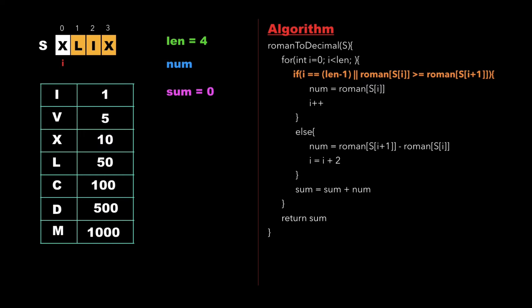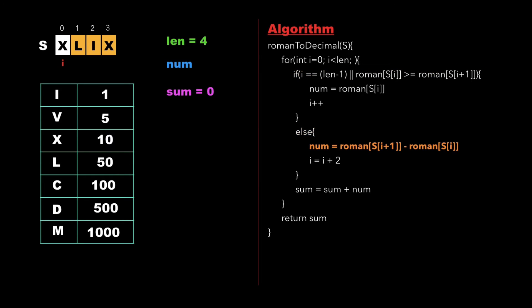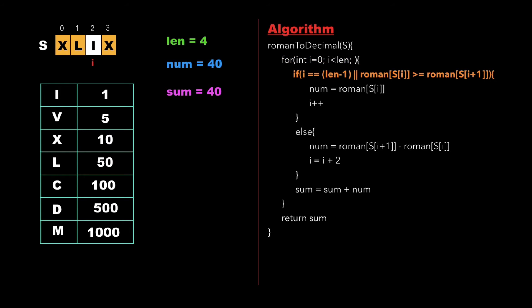We start by traversing the string from i equal to 0 to length. At each step we check whether i equals length minus 1, or if the hash map value of s[i] is greater than or equal to the hash map value of s[i+1]. Since i is not equal to length minus 1 and 10 is not greater than or equal to 50, we move to the else part where we update num as roman[s[i+1]] minus roman[s[i]], which is 50 minus 10 equals 40, and update i as i plus 2. We then update sum as sum plus num, giving 40. We check again whether i is less than length, and again check the same condition.